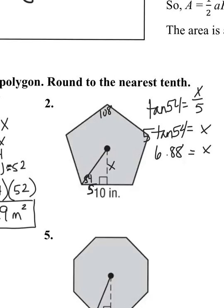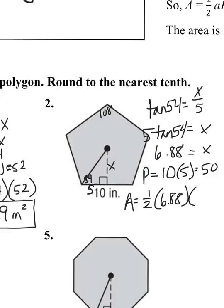So 6.88 is my apothem. My perimeter is 10 inches for each side times 5 sides. My perimeter is 50. So the area of this pentagon is 1 half the apothem times the perimeter of the whole shape. Area is equal to 172 inches squared.